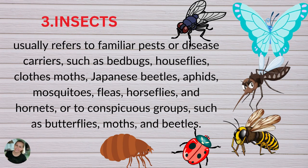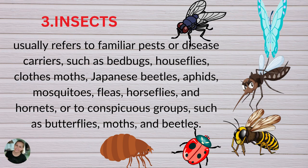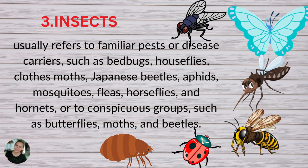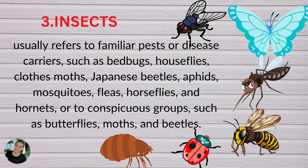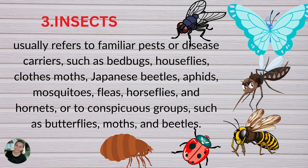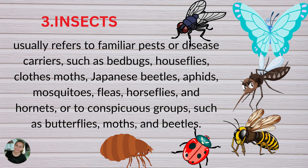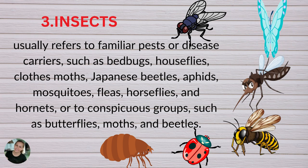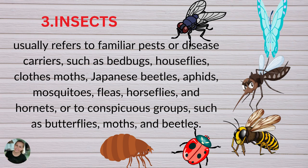Another group of arthropods are insects. Insects usually refers to familiar pests or disease carriers such as bedbugs, houseflies, moths, Japanese beetles, aphids, mosquitoes, fleas, horseflies, and hornets, or other species groups such as butterflies, moths, and beetles.